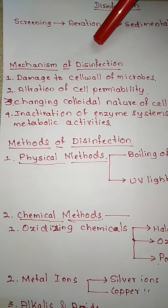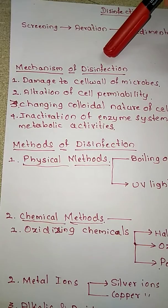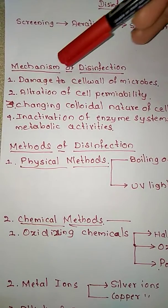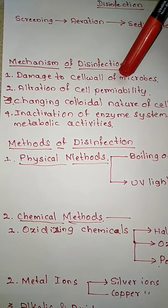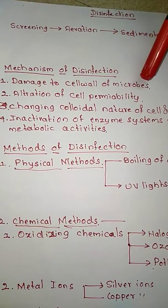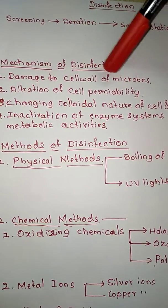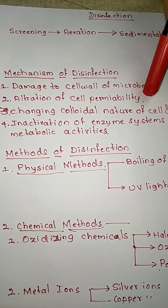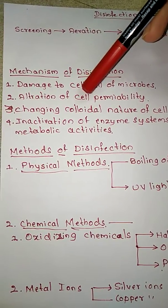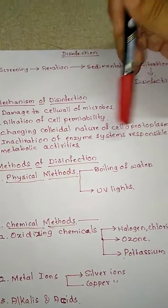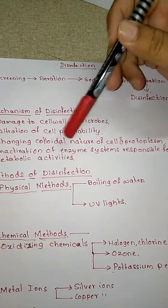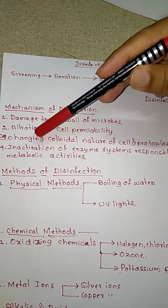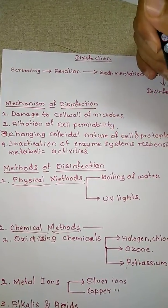Now let's look at the mechanism of disinfection — how microbes are killed after adding chemicals or light. First, the chemicals damage the cell wall of the microbes, making survival difficult. Second, there is alteration of the cell permeability. Third, the colloidal nature of the cell and protoplasm is changed. Fourth, there is inactivation of the enzyme systems responsible for metabolic activities.